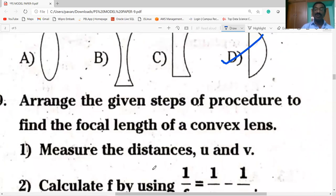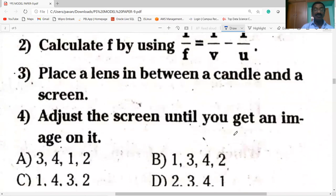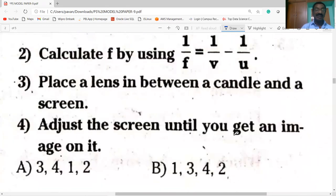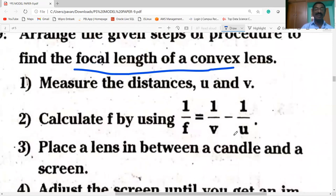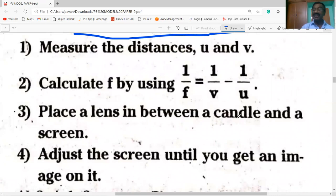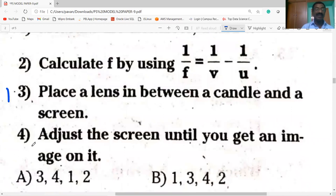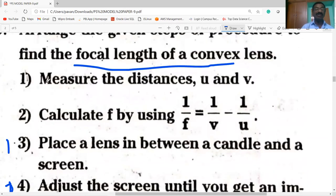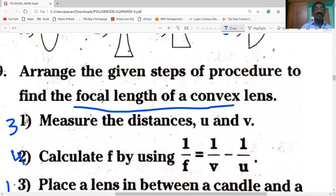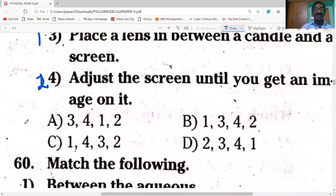Arrange the given steps of procedure to find the focal length of the convex lens. Place the lens in between candle and the screen, it is the first one. Next, adjust the screen until you get an image on it. It is the second one. Measure the distance U and V, it is the third point. Finally, calculate the focal length by using the lens formula. It is the order. So option A is correct.